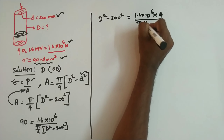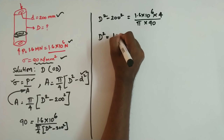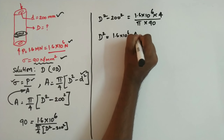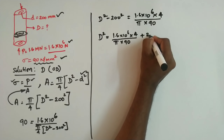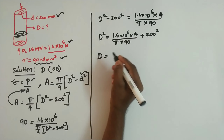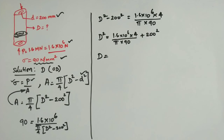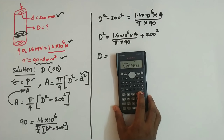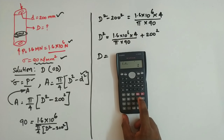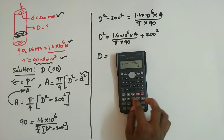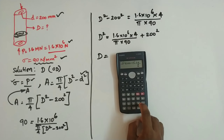Rearranging: D squared equals 1.6 into 10 to the power 6 times 4, divided by pi into 90, plus 200 squared. Then take the square root of the whole expression. Evaluating: 1.6 into 10 to the power 6 into 4, divided by 3.14 into 90.